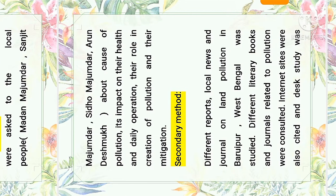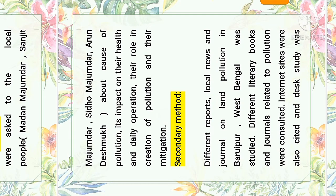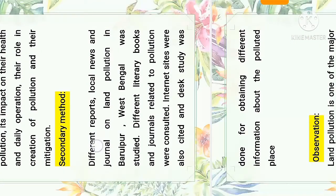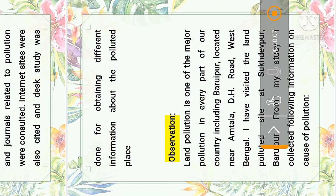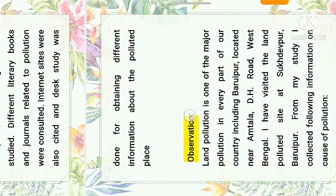Secondary method: different reports, local news, and journals on land pollution in Baruipur, West Bengal were studied. Different literary books and journals related to pollution were also consulted. Internet sites were also searched and day studies were done for obtaining different information about the polluted place.